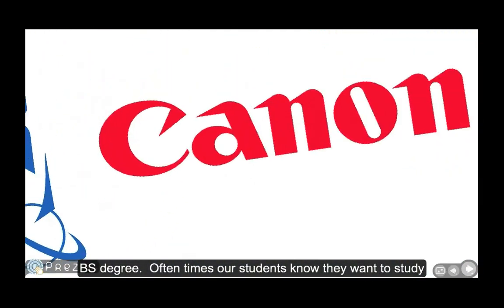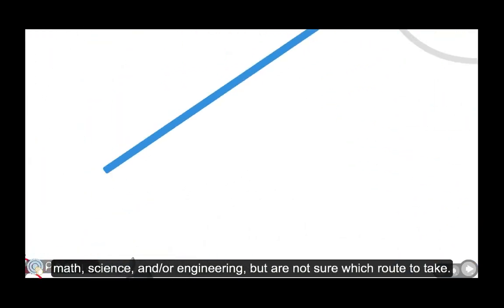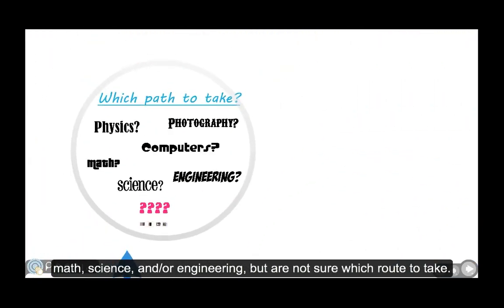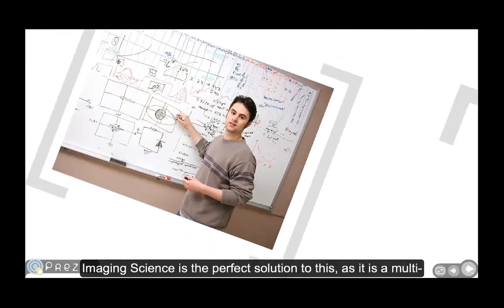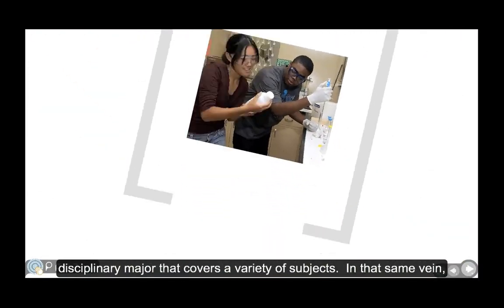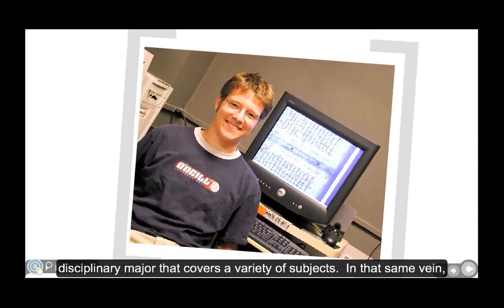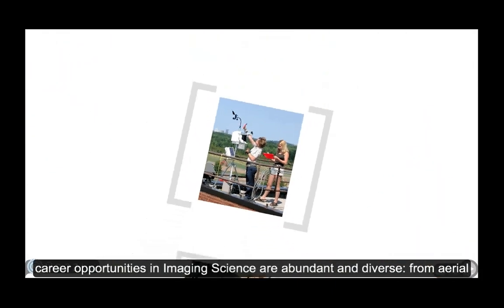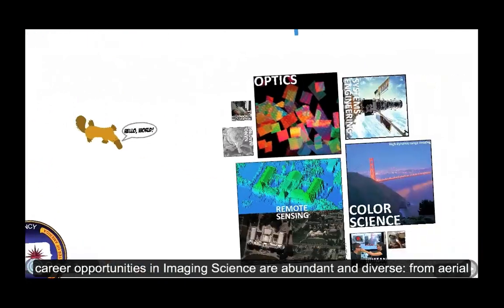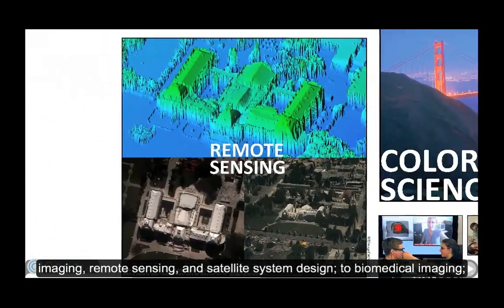Oftentimes, our students know they want to study math, science, and or engineering, but are not sure which route to take. Imaging science is the perfect solution to this, as it is a multidisciplinary major that covers a range of subjects. In that same vein, career opportunities in imaging science are abundant and diverse, from aerial imaging, remote sensing, and satellite system design.